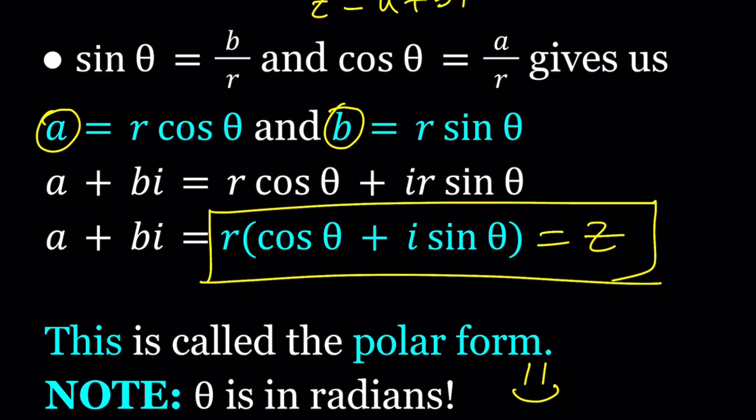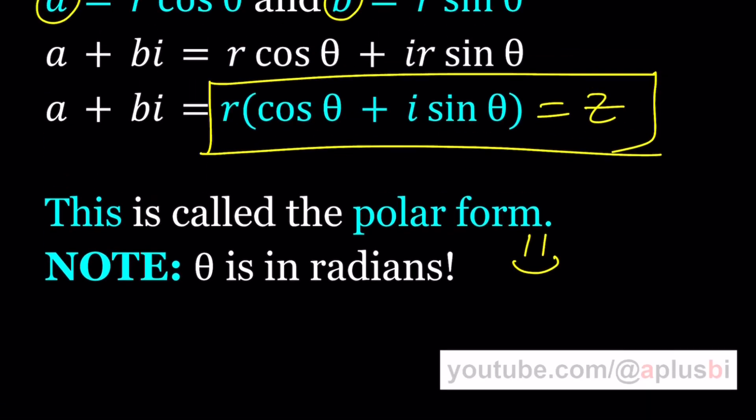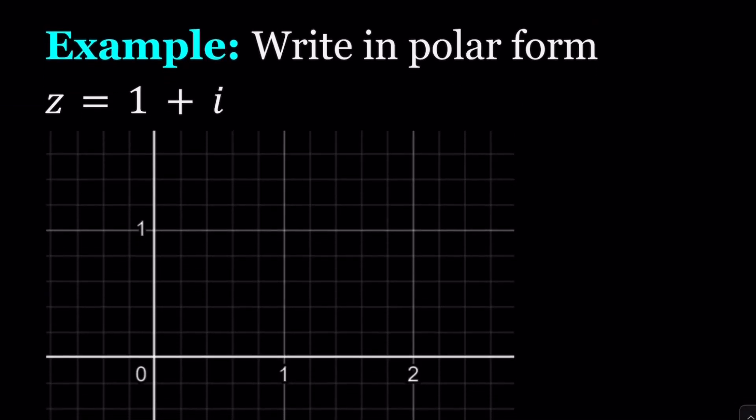Remember, theta is supposed to be in radians. So let's go ahead and take a look at some of the examples, and then we'll go into more details later. How do we write a number in polar form?